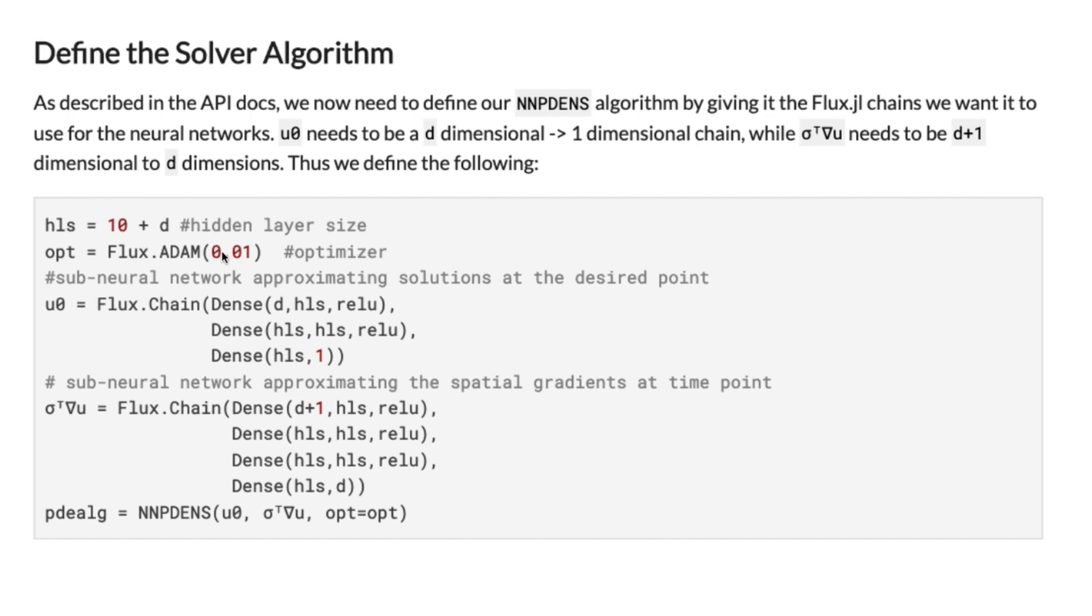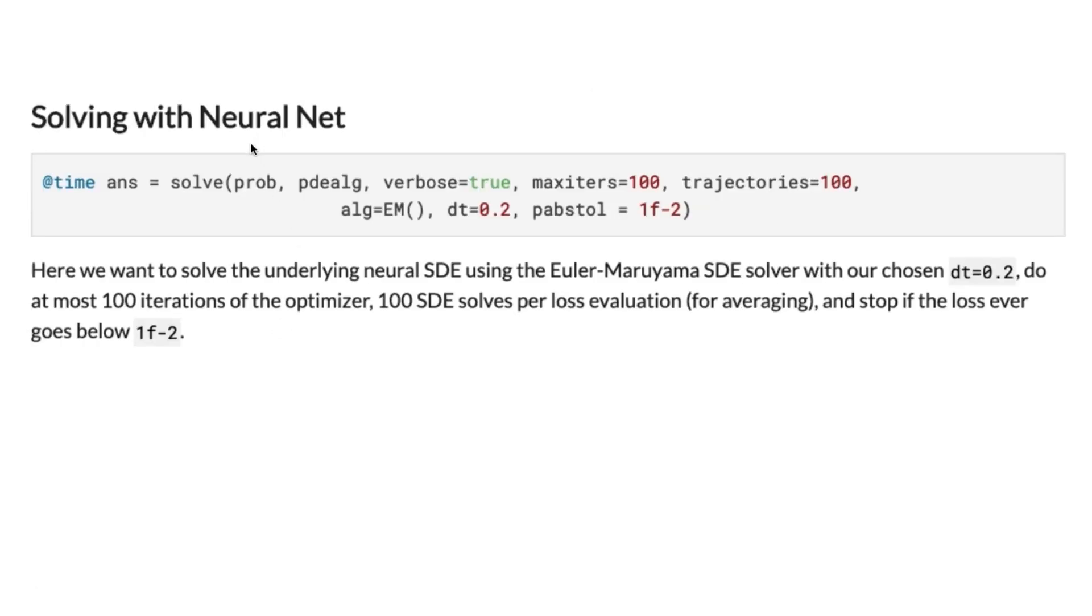We also need to define the optimizer and size of hidden layers. The first neural network has input the same dimensionality as the task, and the second neural network has input that equals dimensionality plus one. Finally, we initialize our algorithm NNPDEStochasticAlgorithm, which will be used in our solver. In the last point, we just need to run our solver, initialized with the problem and algorithm.